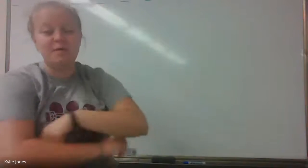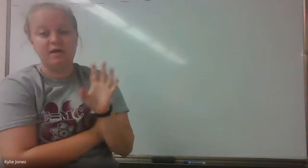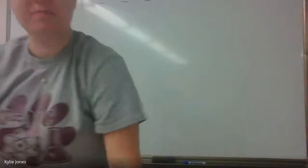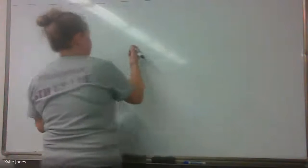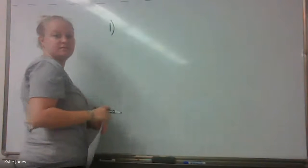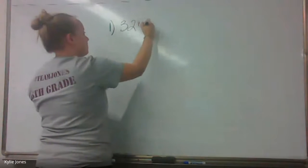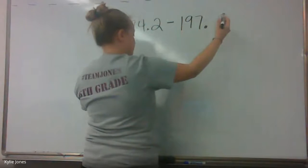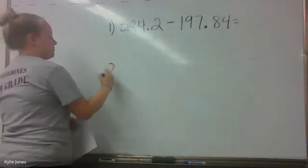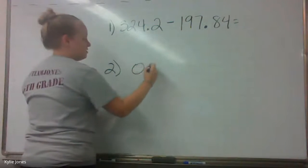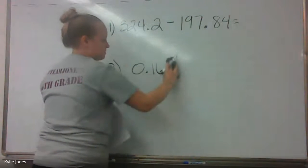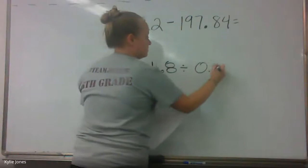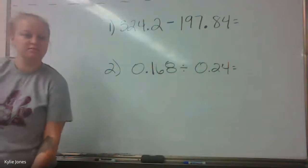Alright, so we're going to start today with just a little bit of a warm-up. We're going to need two problems, so I'm going to write both on the board and I'm going to have you guys work on them on your own, kind of like a warm-up for a math class, and then we'll go over them together. So let's start with some warm-up problems and go from there. First one, number one, can you guys see that good? Do I need to make it bigger? Number one is 324 and two tenths minus 197 and 84 hundredths. Number two will be 0.168 divided by 0.24.